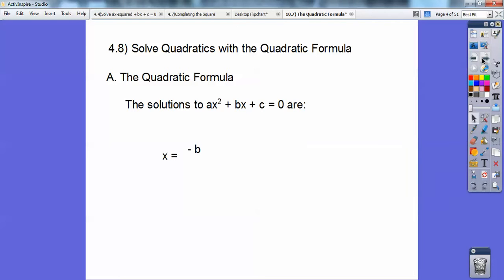Let's try that again. x equals opposite b plus or minus square root b² minus 4ac all over 2a. One more time. x equals opposite b plus or minus square root b² minus 4ac all over 2a. One more time?